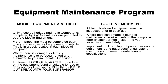Our equipment maintenance program: only those authorized and with competency completed by AWR's evaluator are permitted to operate mobile equipment. A pre-trip and post-trip must be completed each time you use a piece of equipment or vehicle — this is documented in a book located in each piece of equipment. Damage, defects, or maintenance needs must be documented and submitted to your immediate supervisor. Implement lockout tagout procedures on equipment found unsuitable for use or not meeting manufacturer specs — speak with your supervisor before locking out. All hand tools and equipment must be inspected prior to each use.